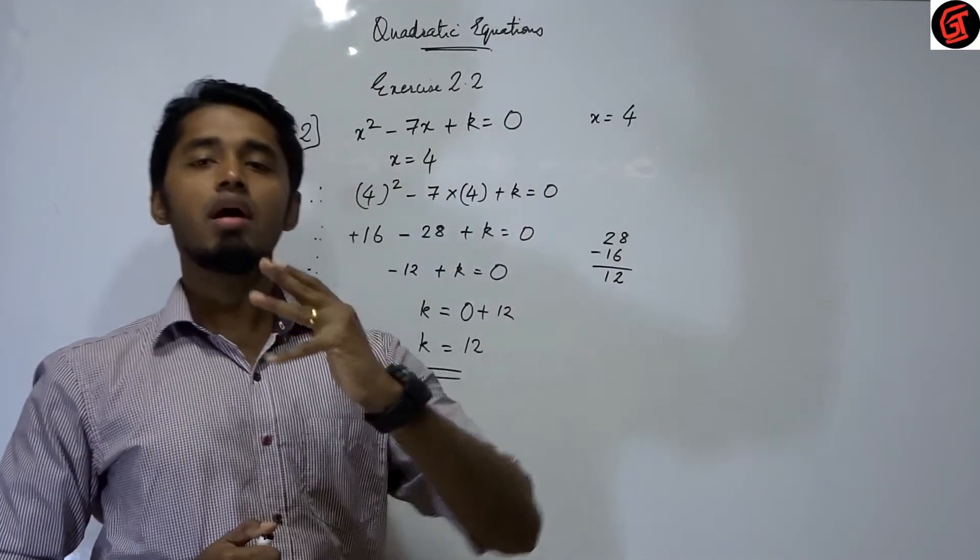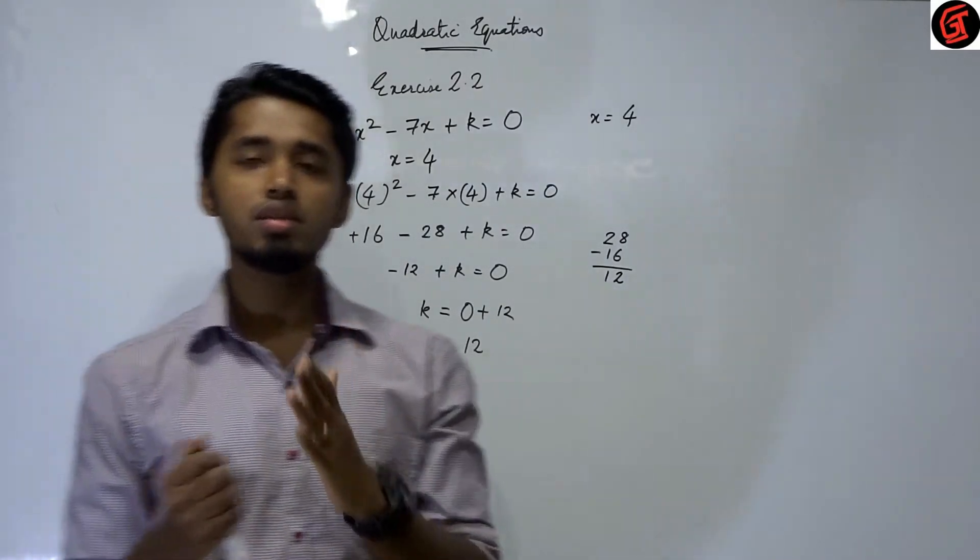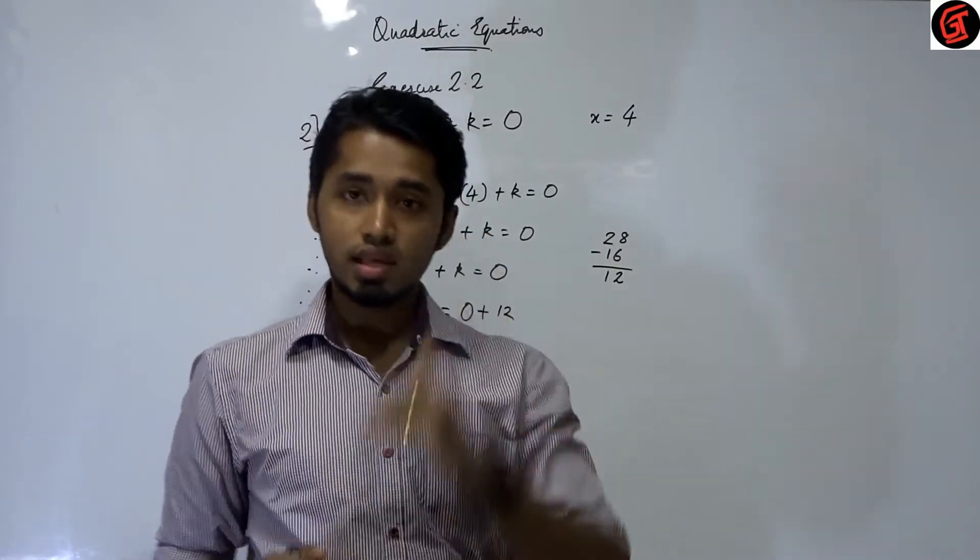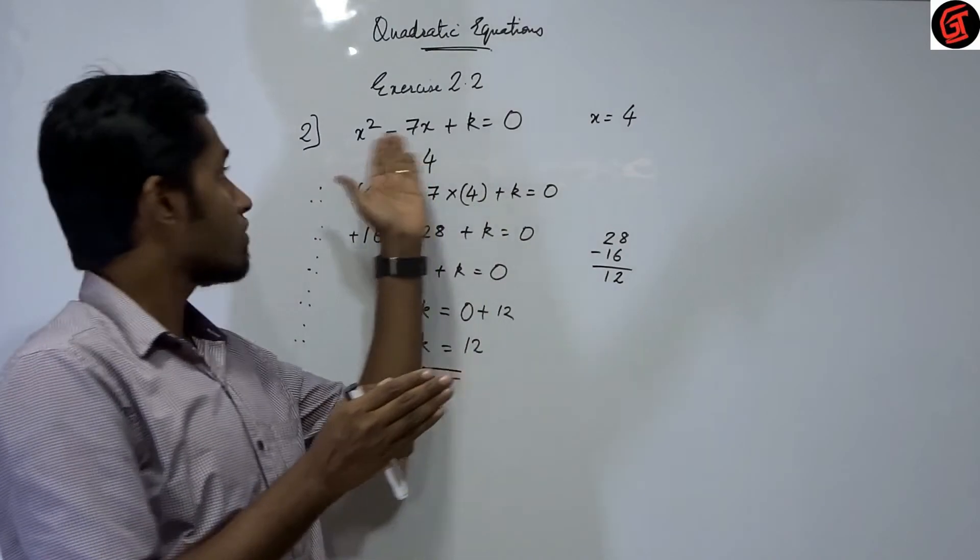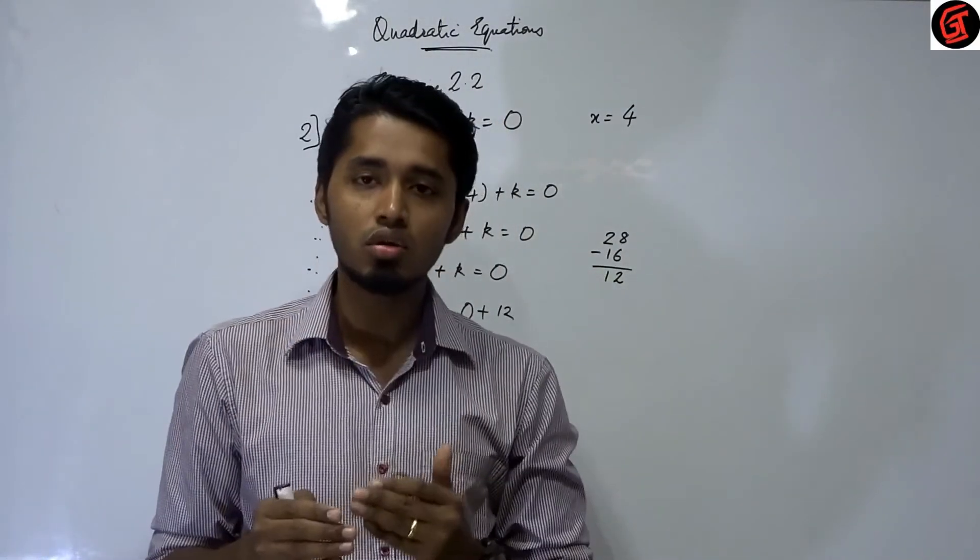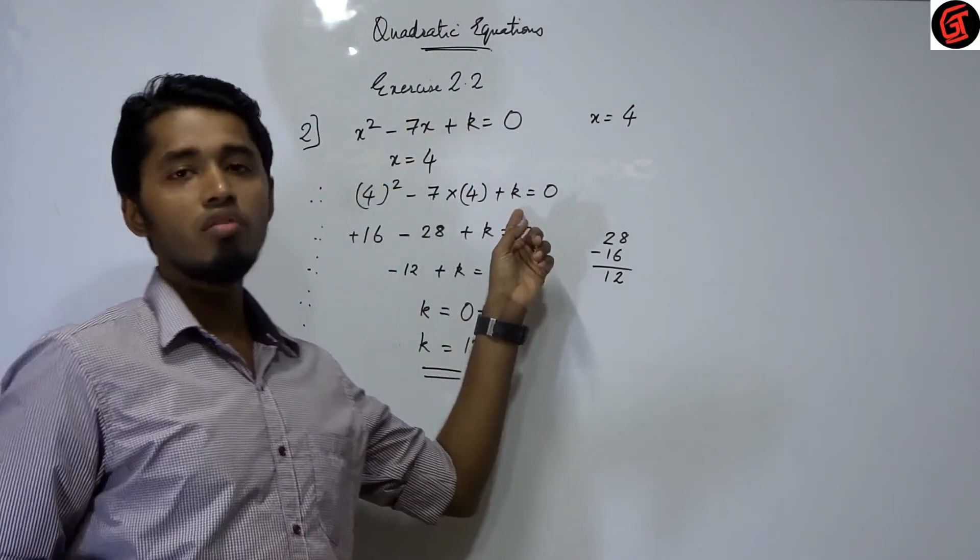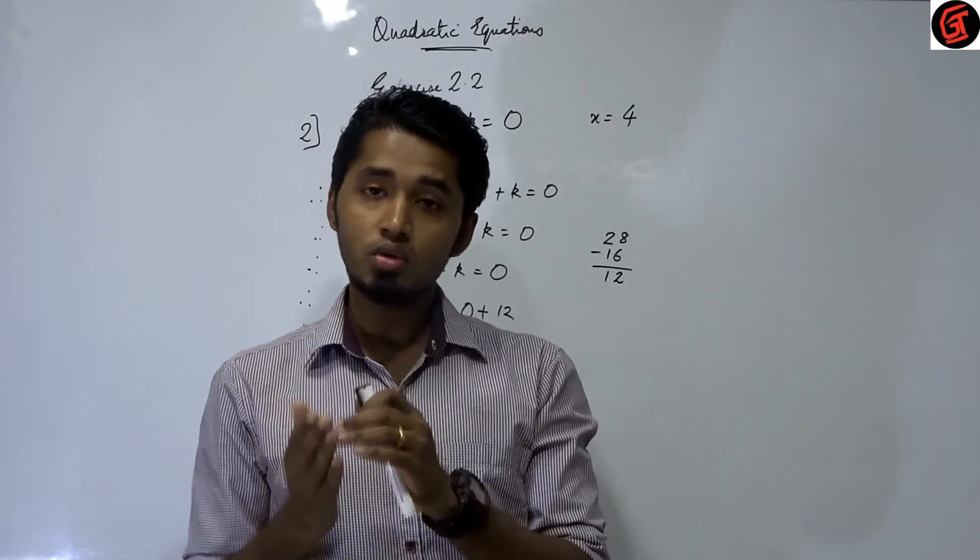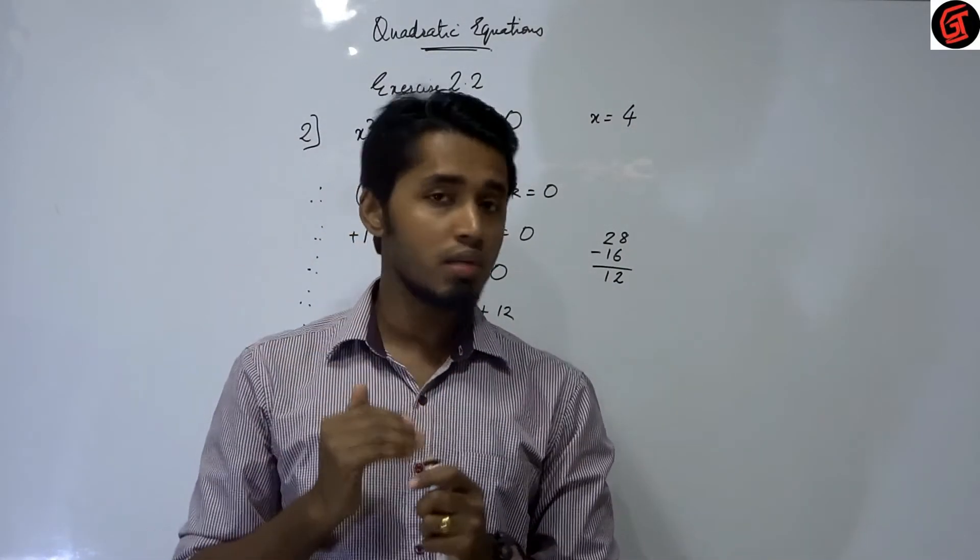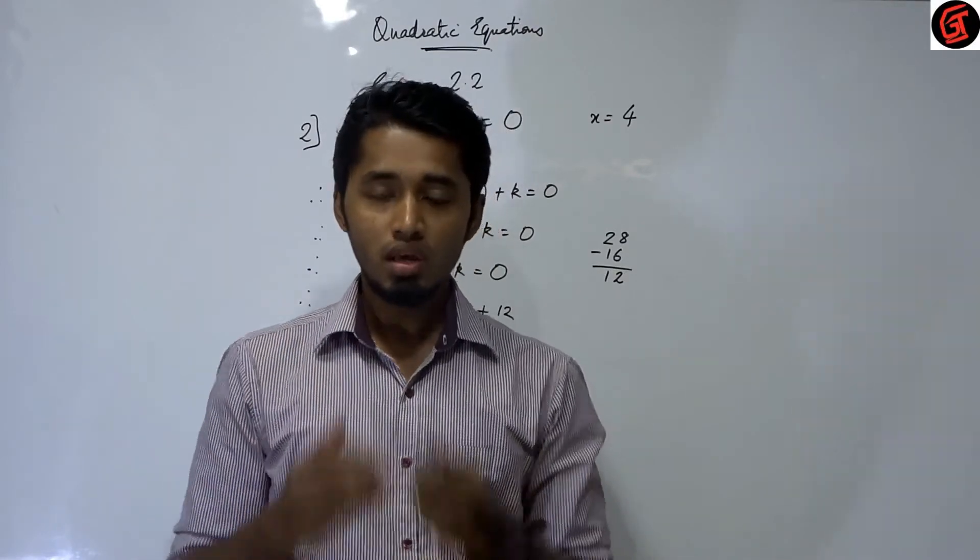So is it clear? The first part and the second part. The first part is just substituting the values. The second part, it is given to us that this value, when you put it in place of the variables, you get the answer as 0 and you have to only find the value of k.